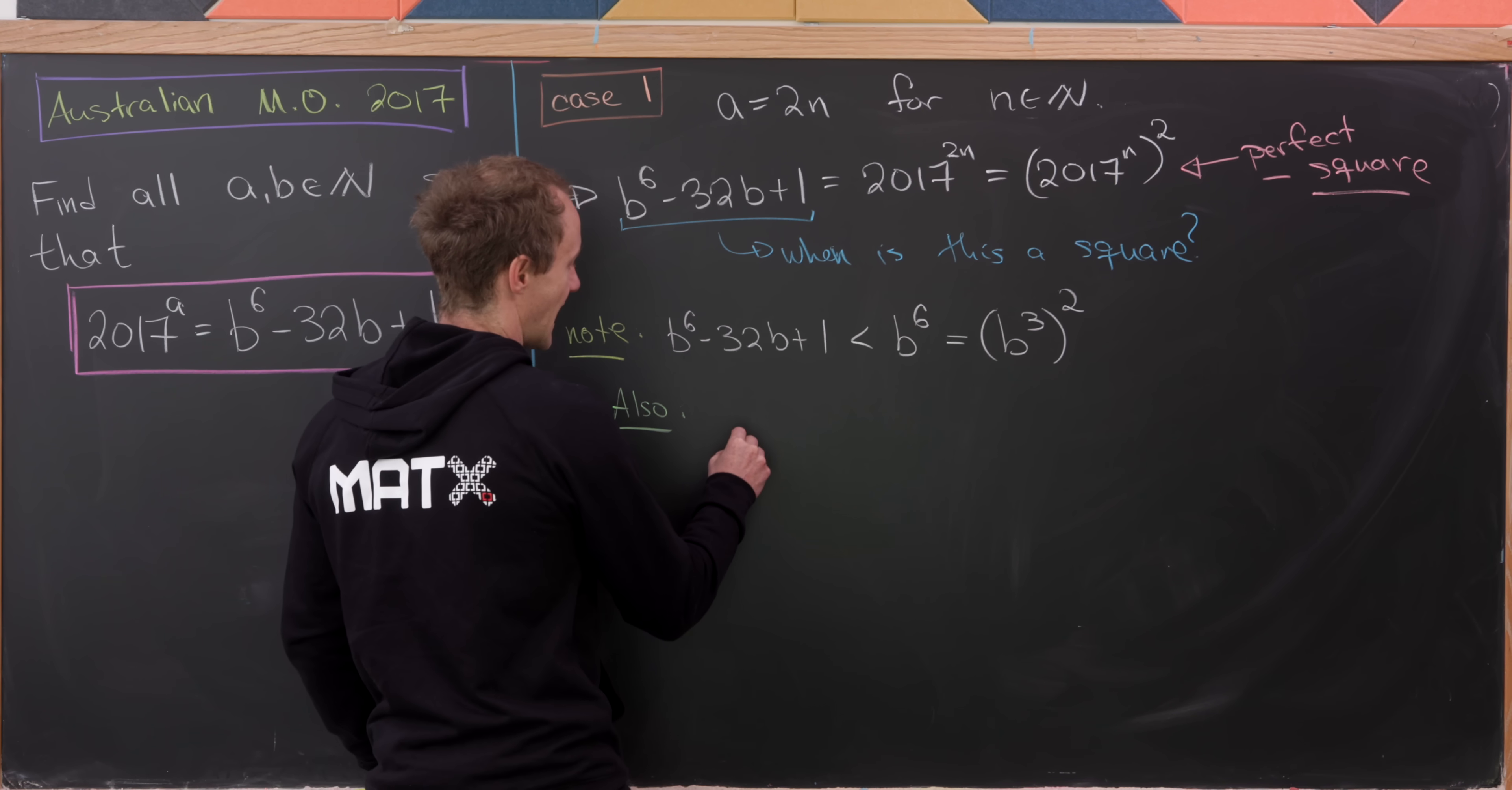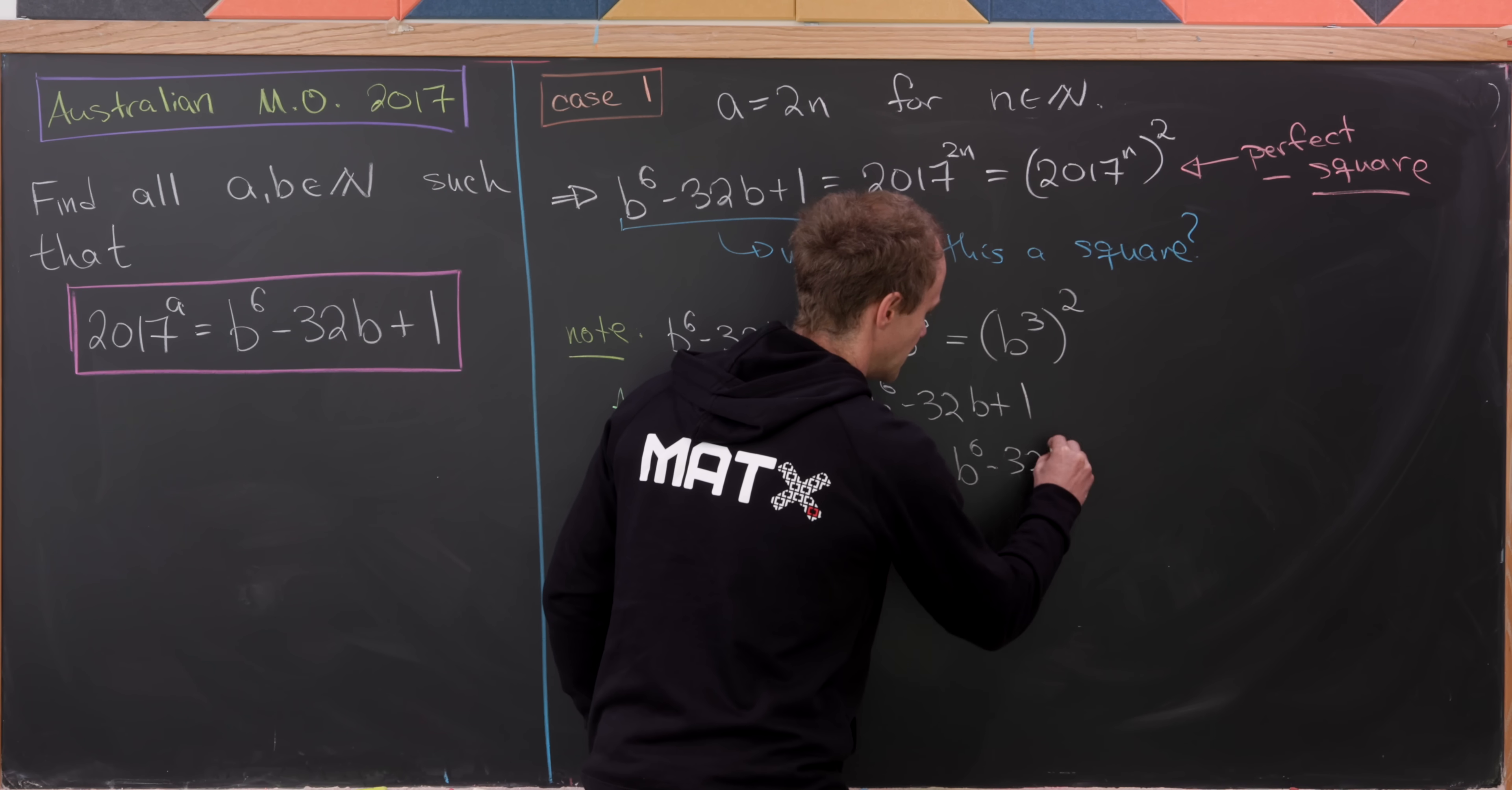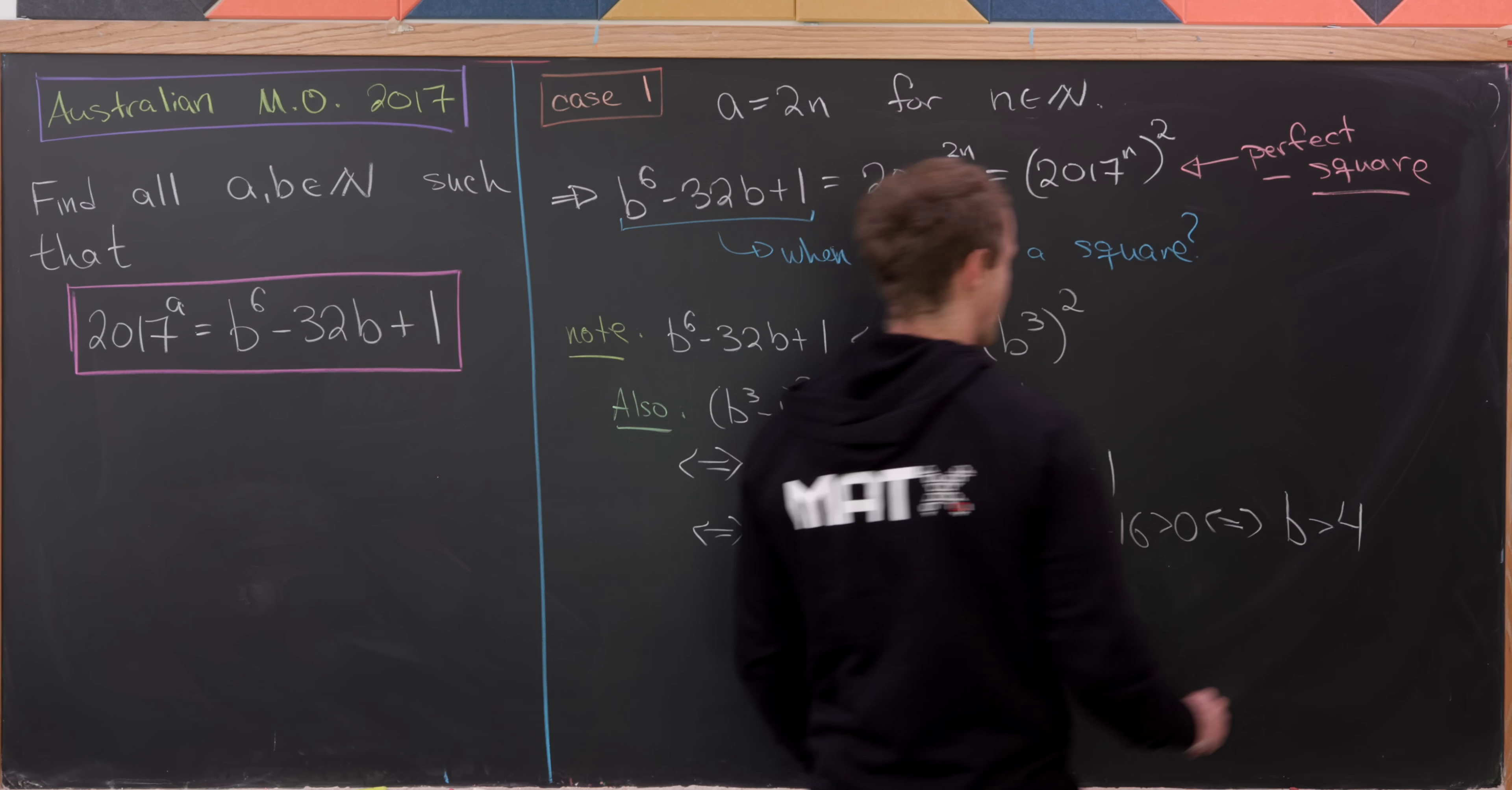So also, let's notice that (B^3 - 1)^2 is less than B^6 minus 32B plus 1 if and only if, well, a couple of the following conditions hold. I'm going to string together a couple of if and only if statements. So if and only if B^6 minus 2B^3 plus 1 is less than B^6 minus 32B plus 1. So that's just expanding this left-hand side. But then that's equivalent to the inequality that we get after moving some stuff around. It'll be something like this: 2B^3 minus 32B is bigger than 0, which in turn holds if and only if B^2 minus 16 is bigger than 0,